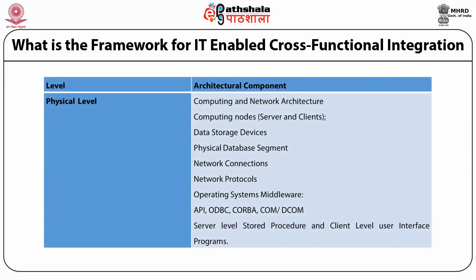The third part is the computing and networking architecture at the physical level. It defines the layout and specification of computing nodes and associated operating systems, storage devices, and physical database segments in the organization. This architecture also includes the specification of arrangements for providing telecommunication interconnections among different nodes internally and with external entities. There are well-developed standards for accomplishing these tasks by using products from different computing vendors.